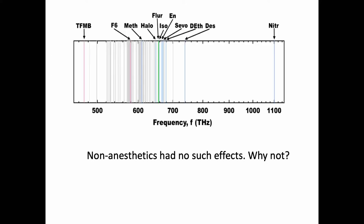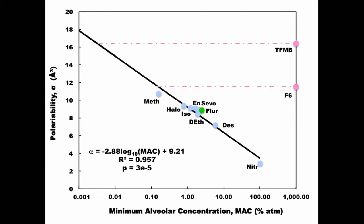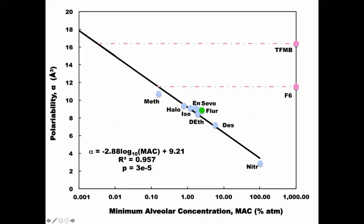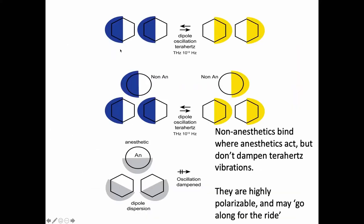The non-anesthetic gases had no such dampening effect. Why not? We looked at the polarizability of all the anesthetics and non-anesthetics, and found the non-anesthetics had higher polarizability. We think the anesthetics bind and disperse the dipoles, whereas the non-anesthetics are so highly polarizable they oscillate right along with the system.